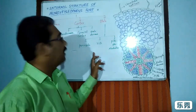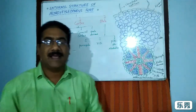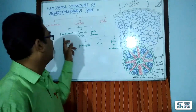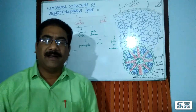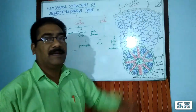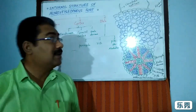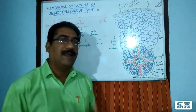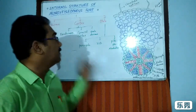The cortex is differentiated into three important zones: exodermis, general cortex, and endodermis. The exodermis is the layer beneath the epidermis, consisting of two to three rows of suberized cells. When the epidermis is removed, the exodermis acts like an epidermis.